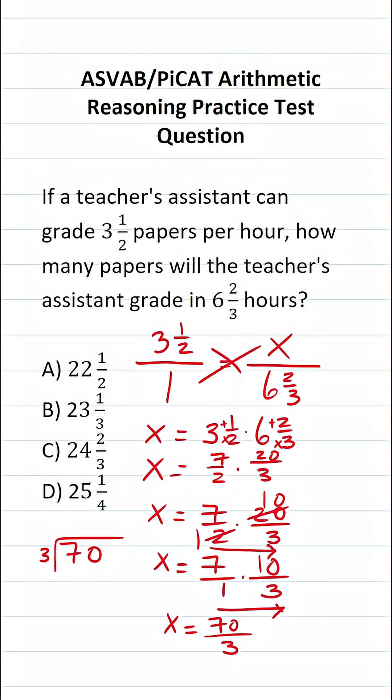So how many times does three go into seven? It goes into seven two times without going over. Three times two is six. Seven minus six is one. Drop down this zero. How many times does three go into 10 without going over? That's going to be three times. Three times three is nine. Ten minus nine is one.